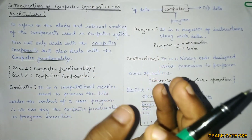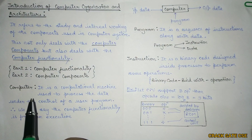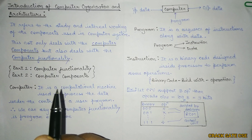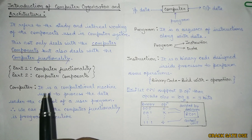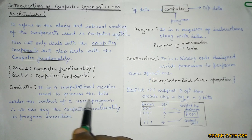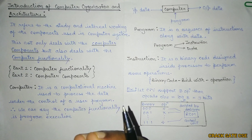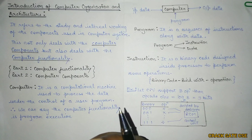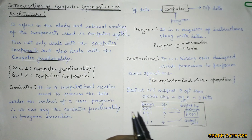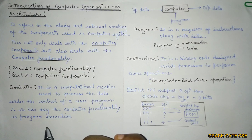Now let's understand what a computer is. A computer is nothing but a computational machine used to process data under the control of a user program. We give some set of instructions and some data into the computer; the computer processes that data and gives an output. So we can say that the core computer functionality is program execution.